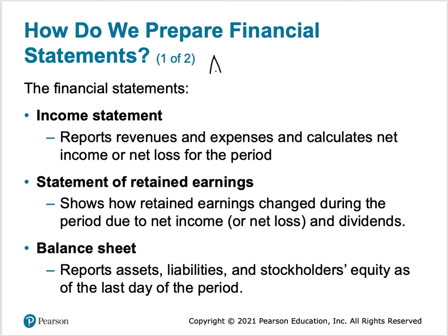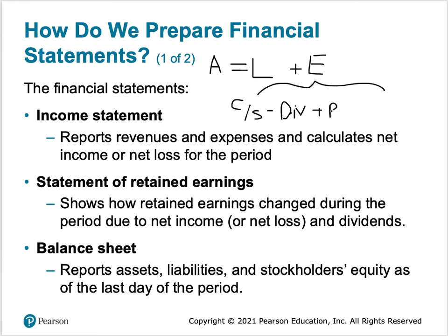The accounting equation is assets equals liabilities plus equity. Within equity we said that there was common stock minus dividends plus revenues minus expenses. The revenues minus expenses would give us net income.